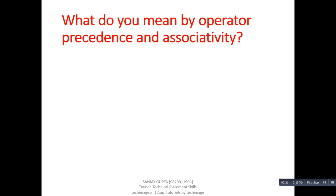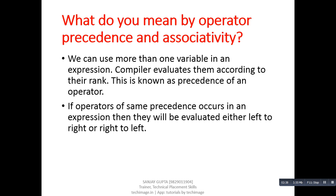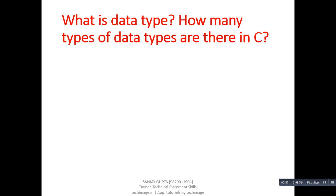Next question: what do you mean by operator precedence and associativity? Precedence: we can use more than one operator in an expression; the compiler evaluates them according to their rank — this is known as precedence of an operator. Associativity: if operators of the same precedence occur in an expression, they will be evaluated either left to right or right to left — this is known as associativity of an operator.